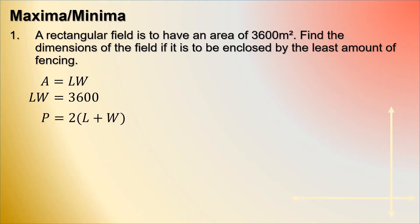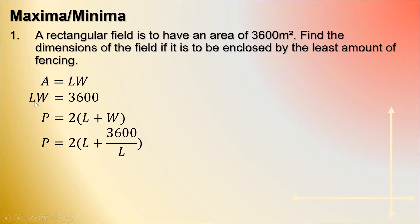For the perimeter, the perimeter is the sum of all the dimensions of the rectangular field, and this is what we need to consider for the amount of fencing. Substituting the value of W — since we can find W by dividing both sides by L, W is equal to 3,600 over L — substituting into the perimeter formula and distributing 2, that is 2L plus 7,200 over L.